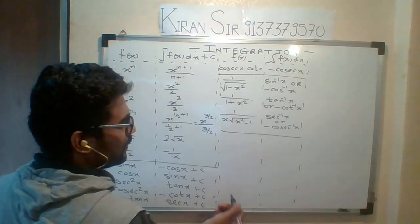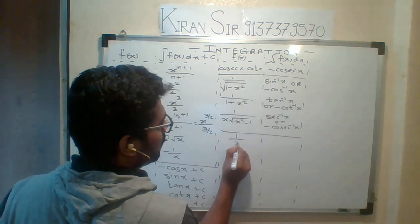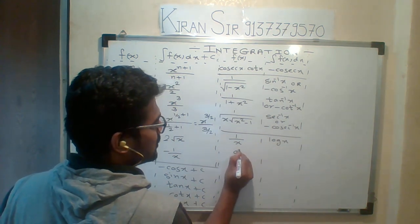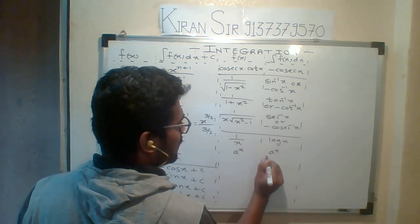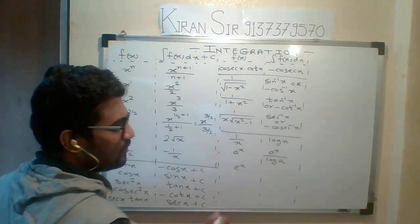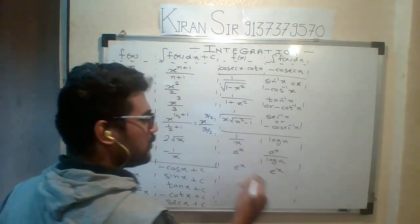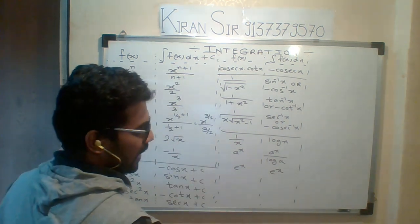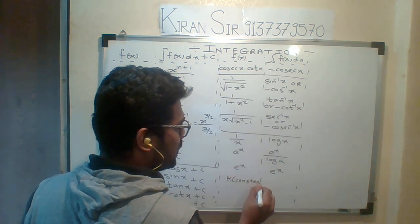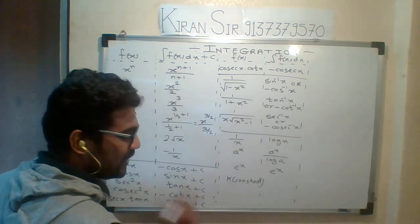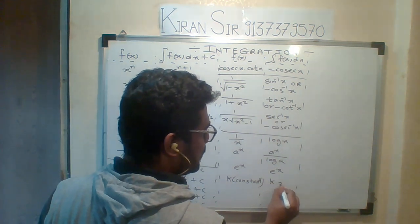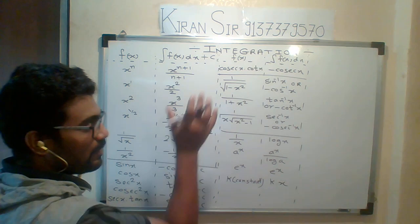Some more important functions: integration of 1 upon x is log x. Integration of a raised to x is a raised to x upon log a. Integration of e raised to x is e raised to x. And finally, if K is a constant, the integration of a constant is the constant multiplied by x — remember, the derivative of a constant is 0, but the integration of a constant is not 0.